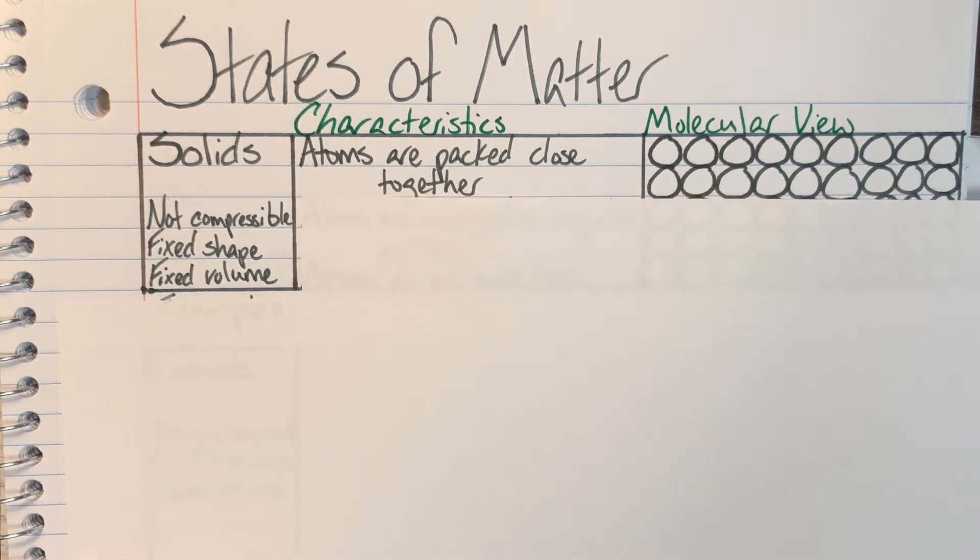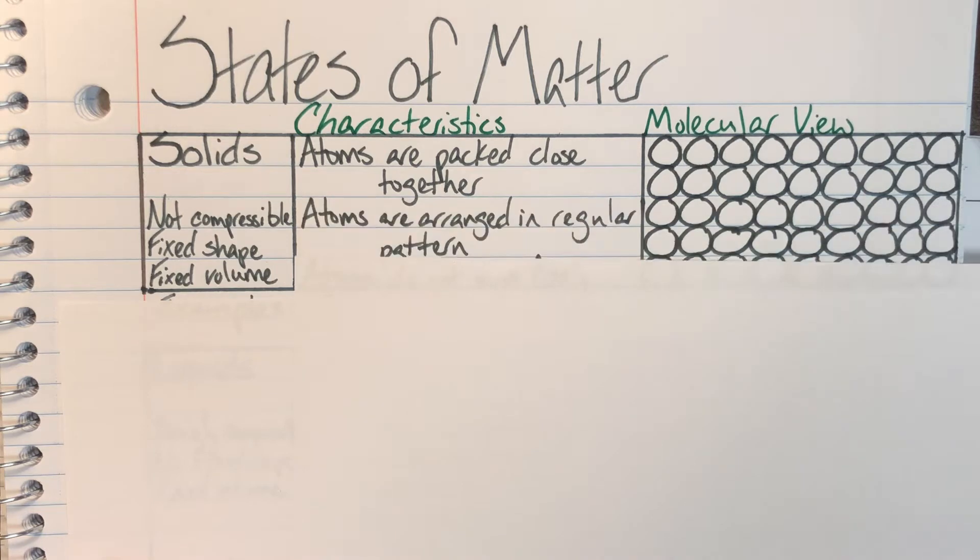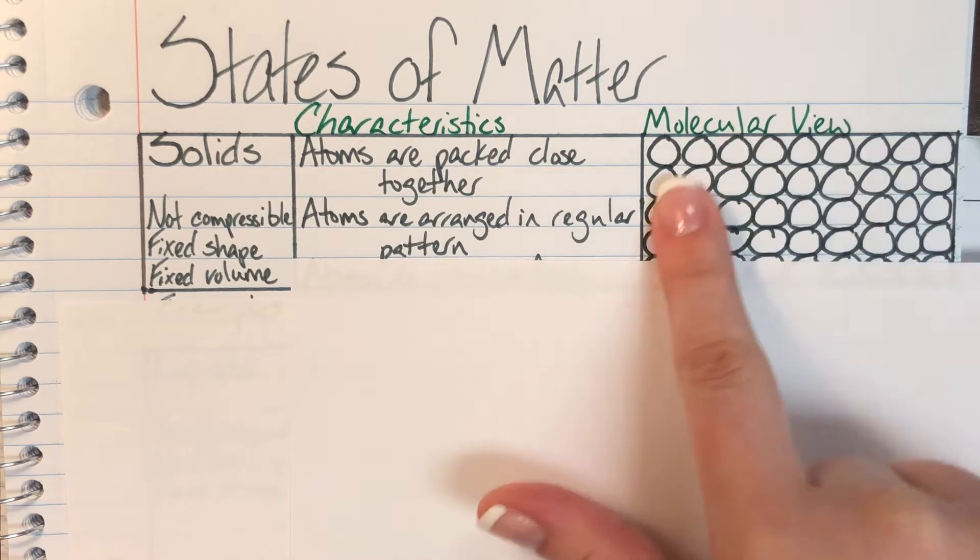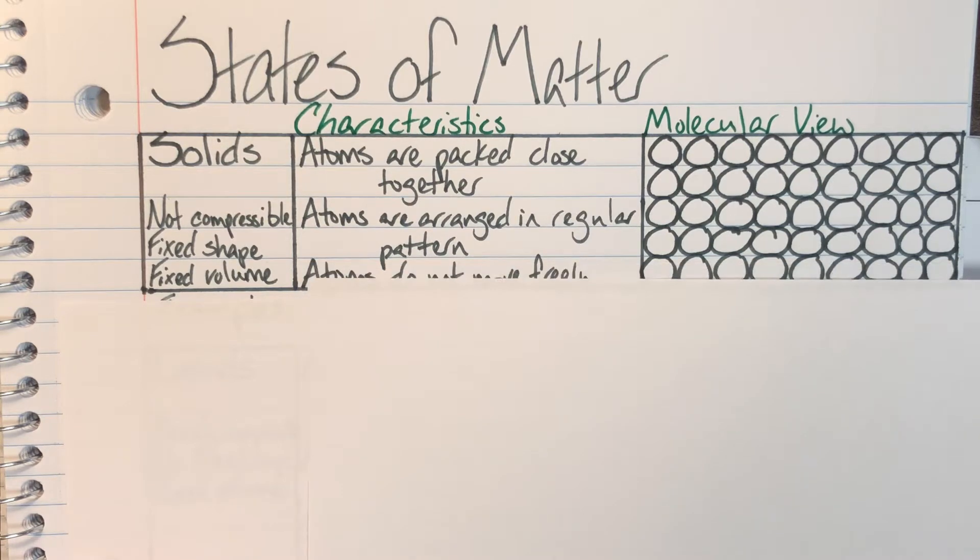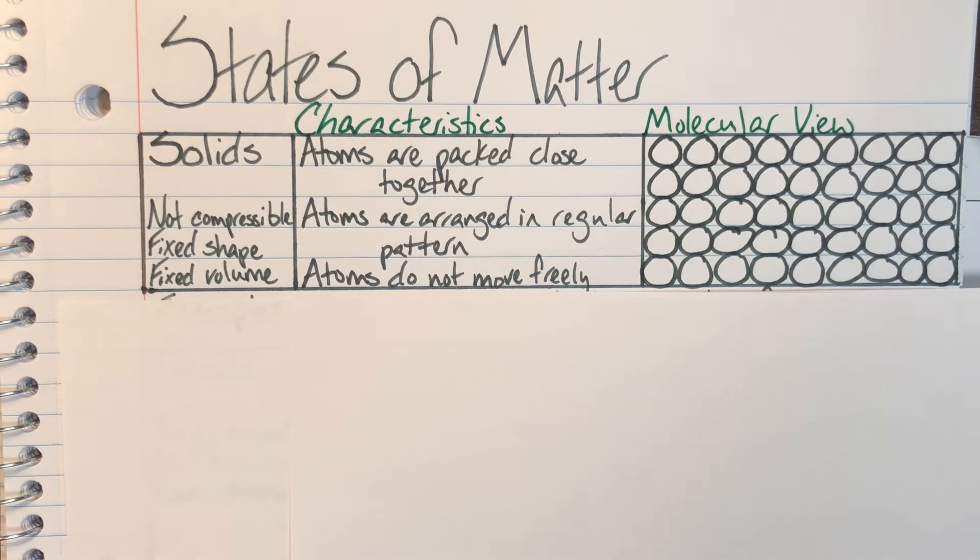Some general characteristics about solids are that atoms are going to be packed very close together and atoms are also going to be arranged in a regular pattern. As you can see here we have a regular pattern and we have basically no room between my circles which are functioning as our atoms. My atoms cannot move freely because they don't have the room to move. They are incredibly packed tight so they cannot move freely.